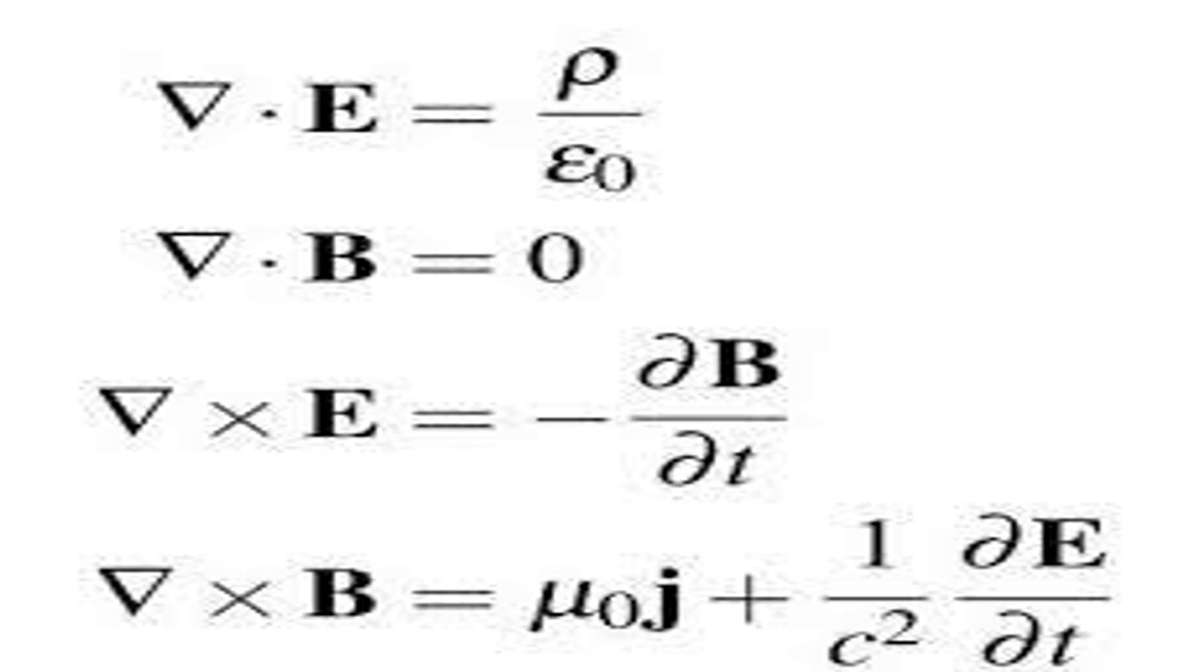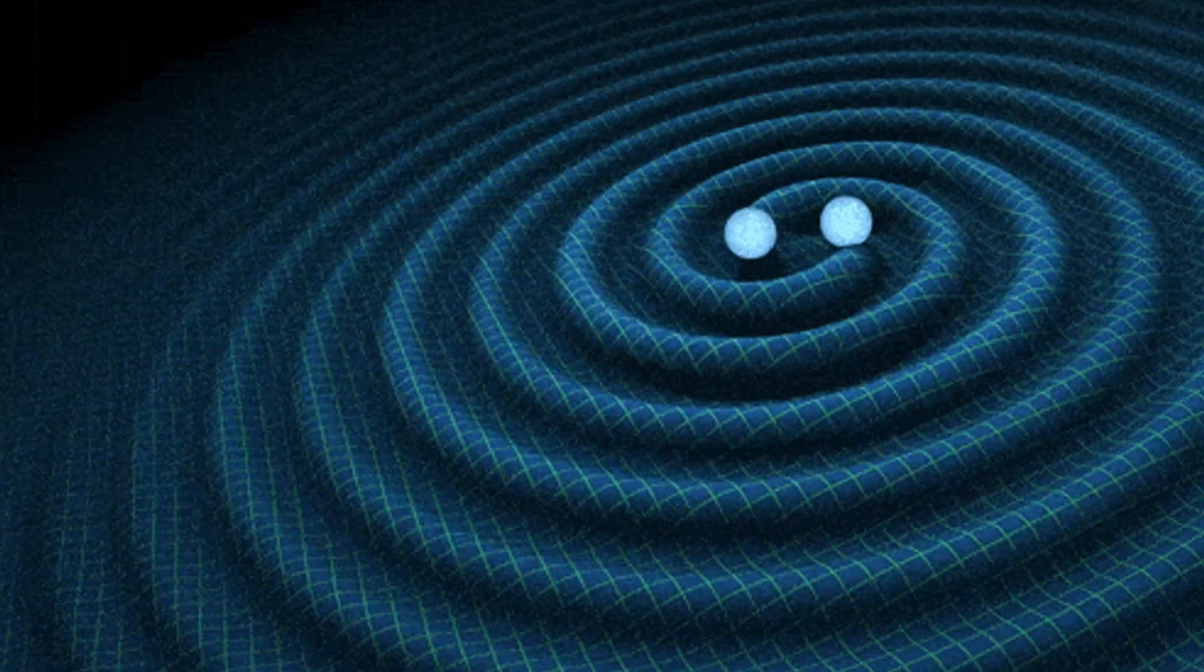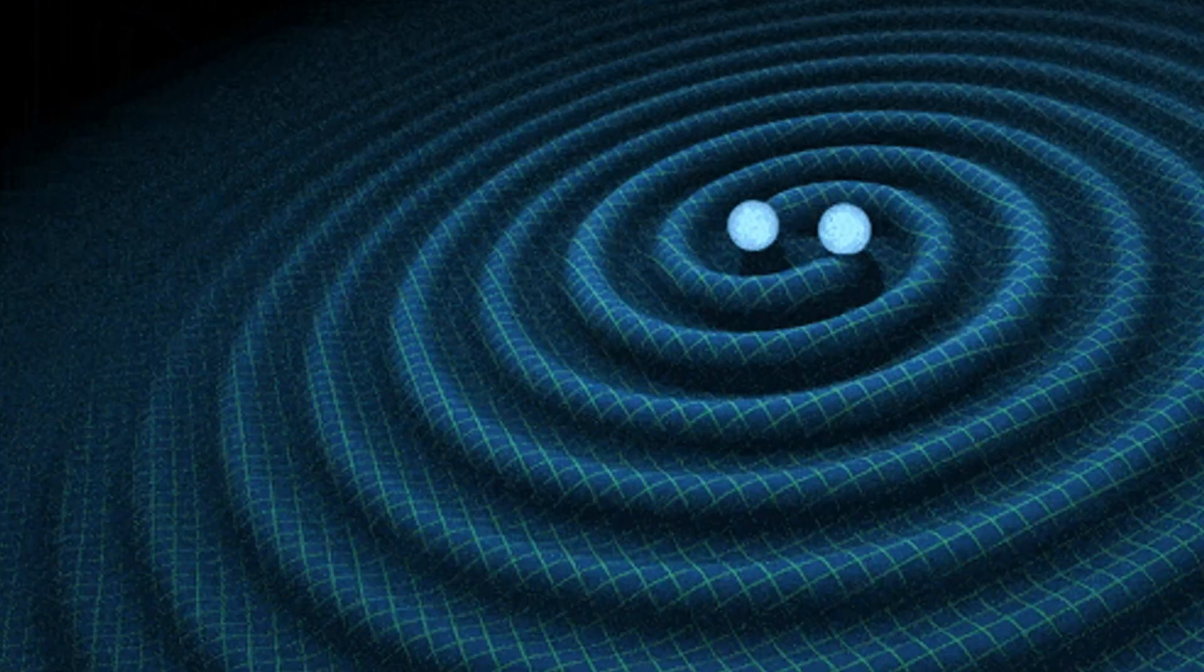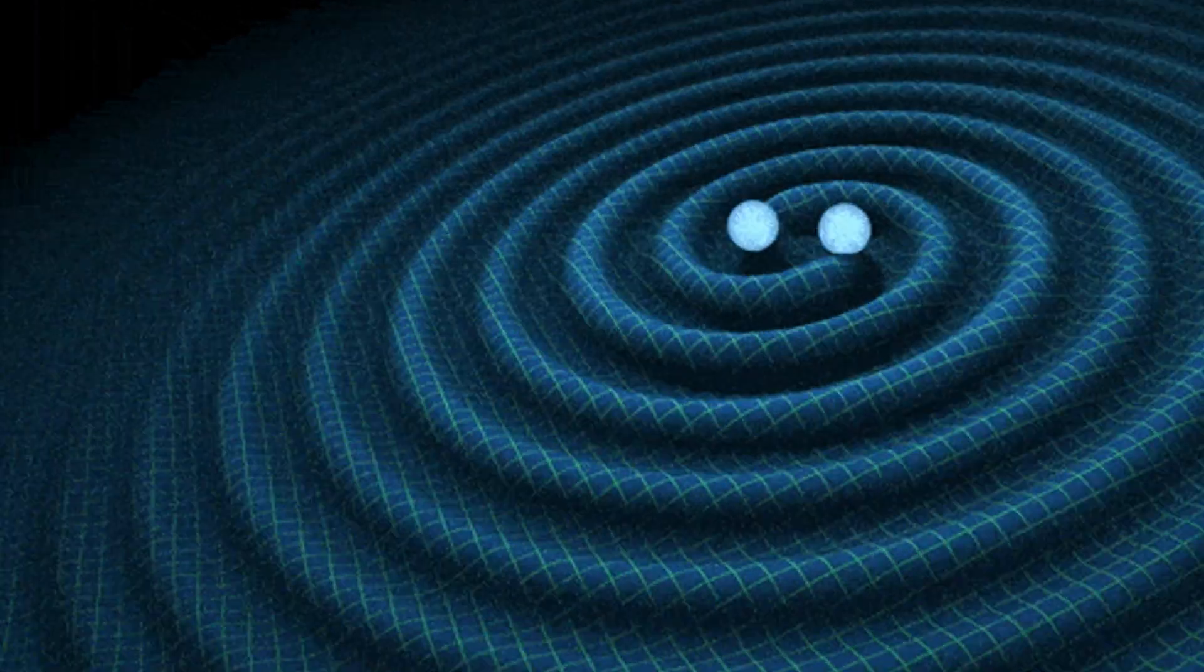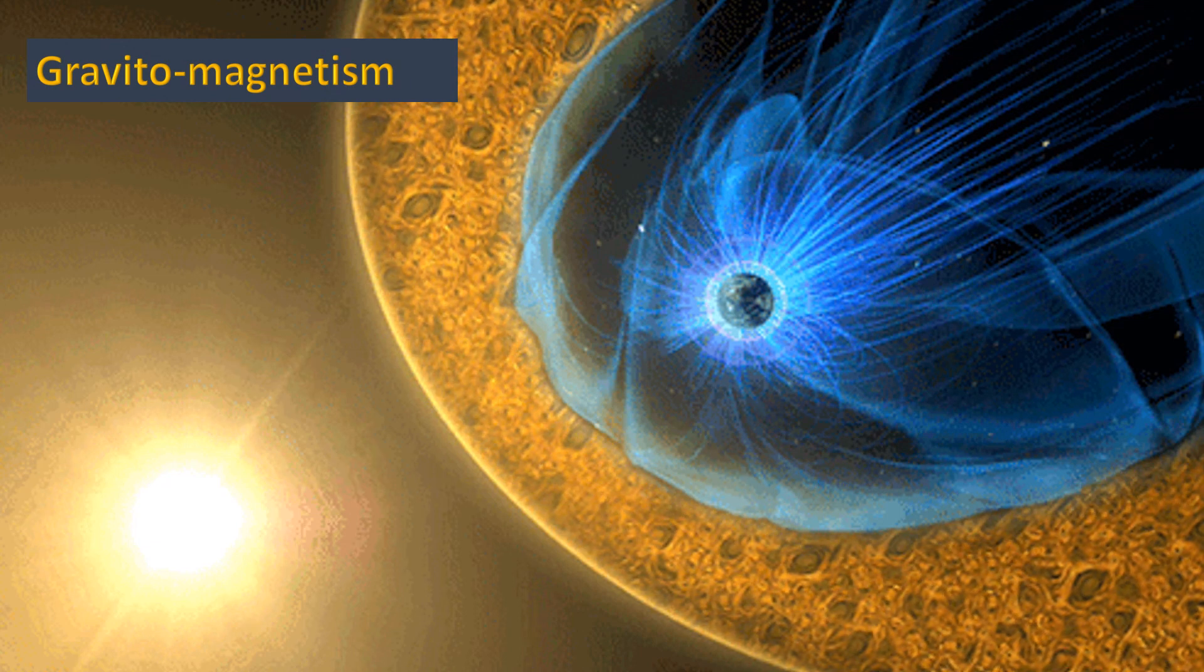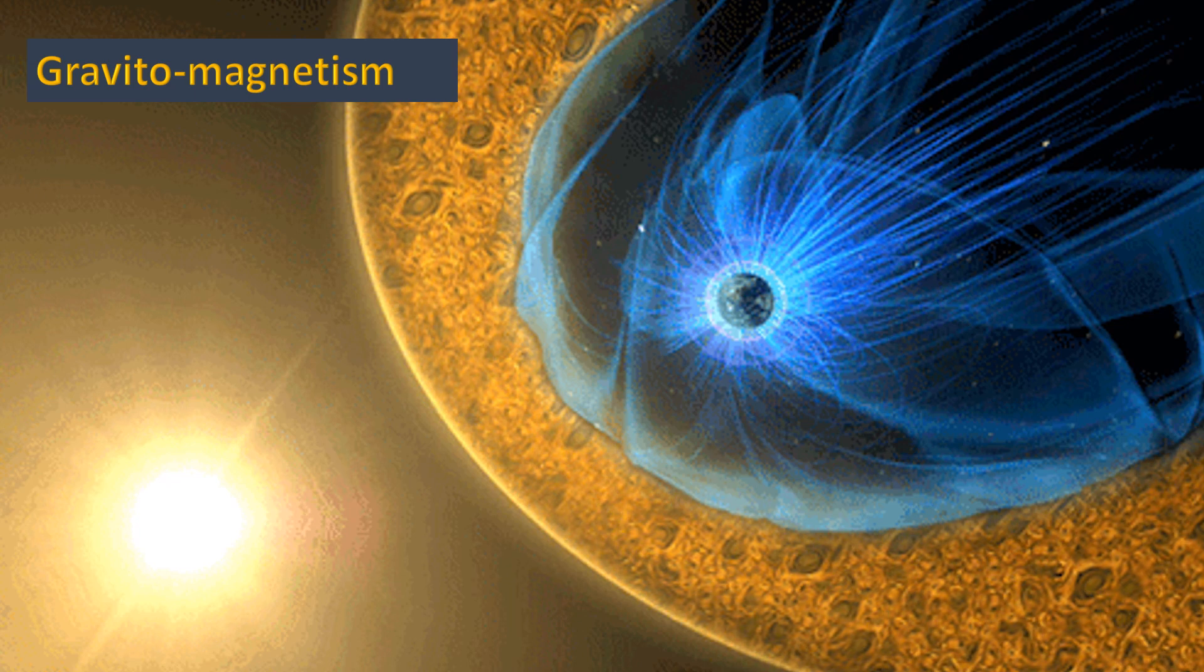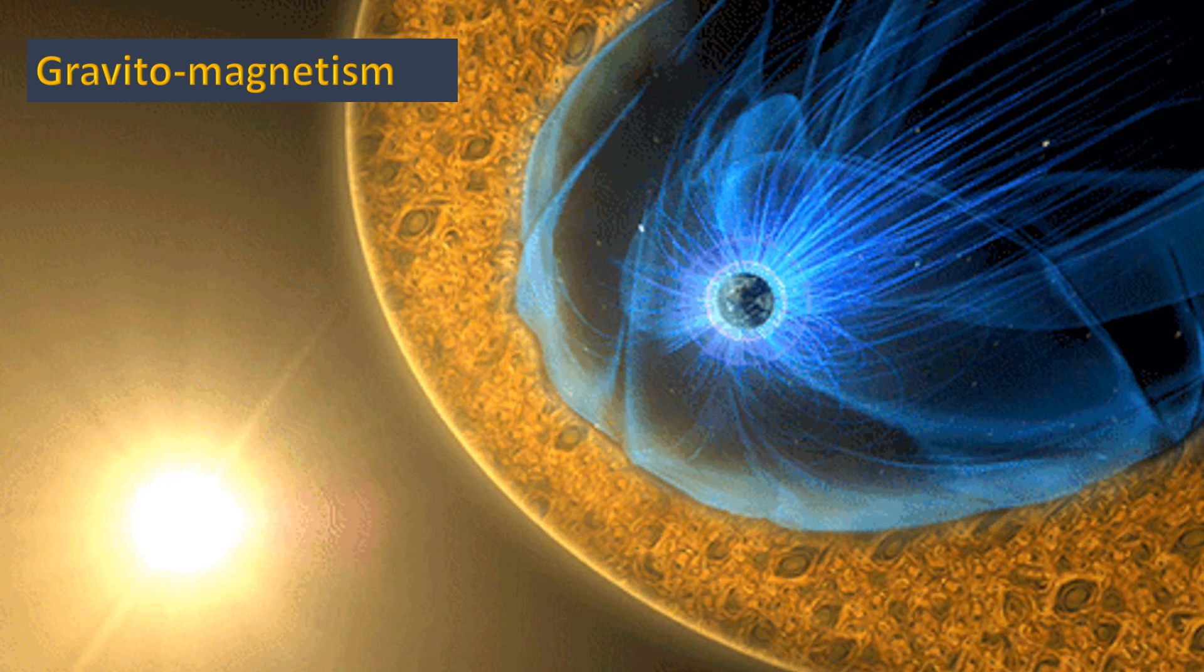In the limits of weak gravitational fields, general relativity predicts that moving masses exhibit magnetic properties in the same way that moving charges do. This is called gravitomagnetism, and it is to masses in the same way that electromagnetism is to charges.